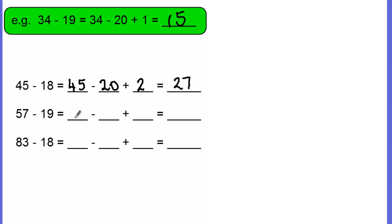OK, next one: 57 take away 19. Once again, a bit of a handful to do that in your head, so we round up the 19 and we call it 20. So let's write it out as it's been changed: 57 take away 20.